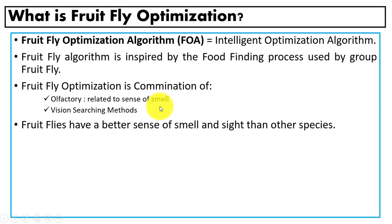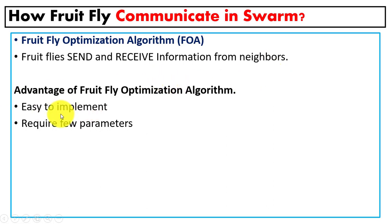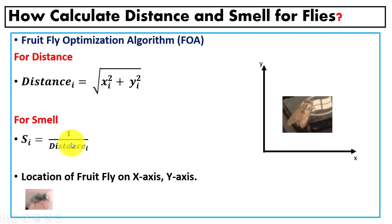We use a smell function to compute values for each fruit fly. Regarding how fruit flies communicate in the swarm: they can send and receive information from their neighbors. This algorithm is easy to implement and uses only a few parameters.